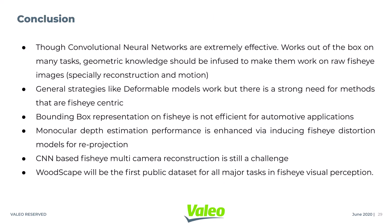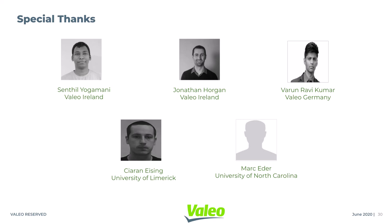Let's recap some of the important points. Though CNNs are extremely effective and work out of the box, geometric knowledge needs to be infused to make them work on fisheye images. Data-driven strategies like deformable convolutions work, but there is a strong need for fisheye-centric methods. Bounding box representation on fisheye is not efficient for automotive applications. Monocular depth estimation performance is enhanced by inducing fisheye distortion models for reprojection. CNN-based fisheye multi-camera reconstruction is still a challenge due to cross-camera view normalization. WoodScape will be the first public dataset for all major tasks in fisheye visual perception.